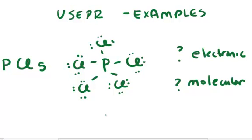The first example we're going to look at is the molecule phosphorus pentachloride. I've drawn here the Lewis structure for phosphorus pentachloride because that's the first thing you need to do in predicting structures.